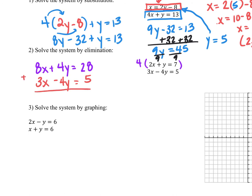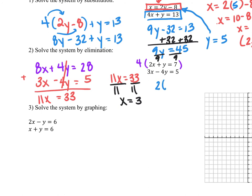I'm going to add these two equations together to eliminate the y terms. When I do that, 8x plus 3x is 11x; the y terms eliminate; and 28 plus 5 is equal to 33. So 11x equals 33 — divide by 11 and x equals 3. Now that x equals 3, I plug it back into the first equation: 2 times 3 plus y equals 7, so 6 plus y equals 7, subtract 6, and y equals 1. The solution is the point (3, 1).